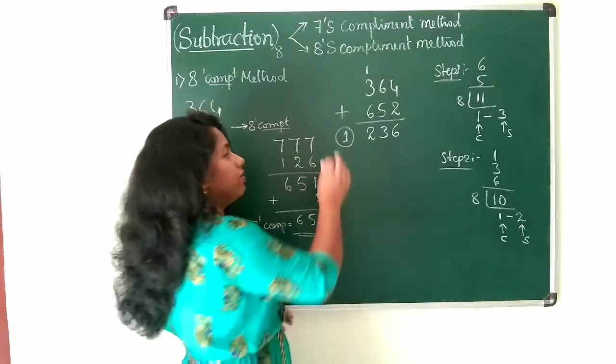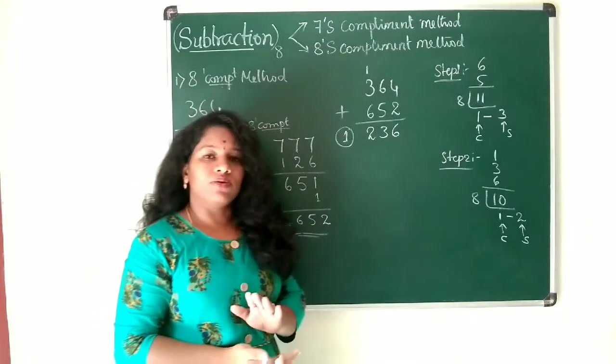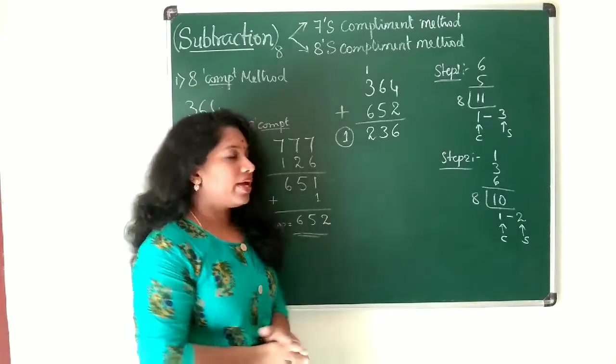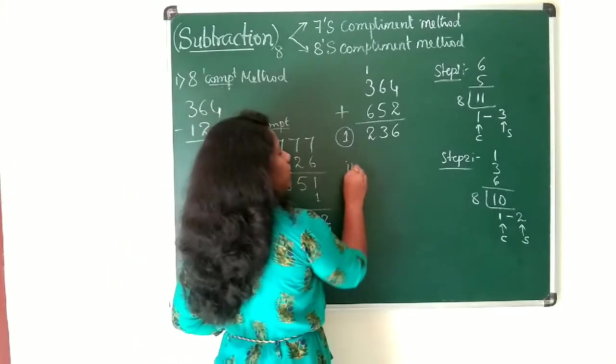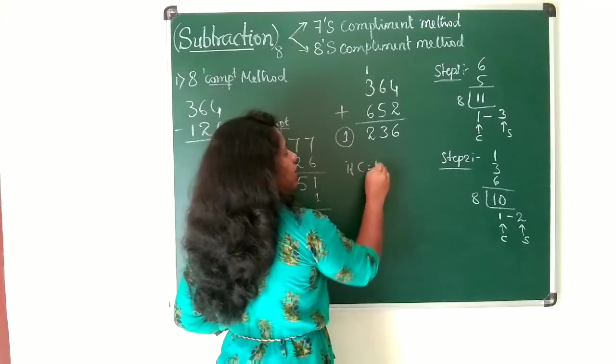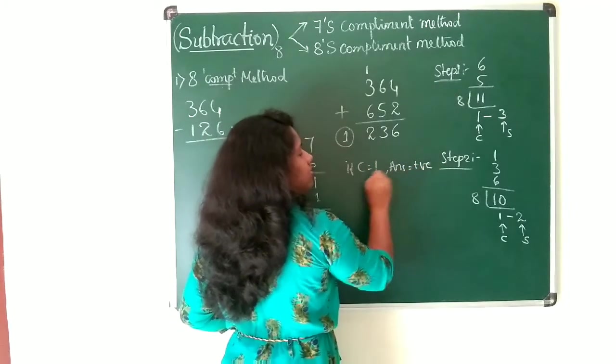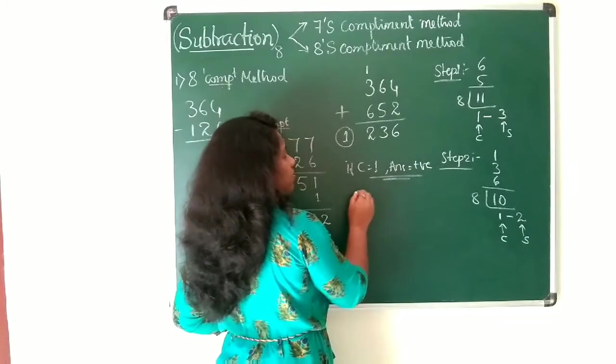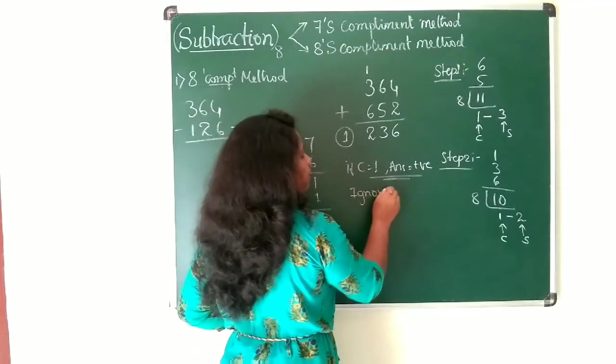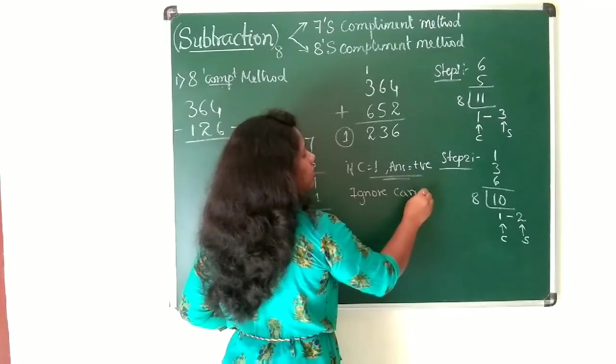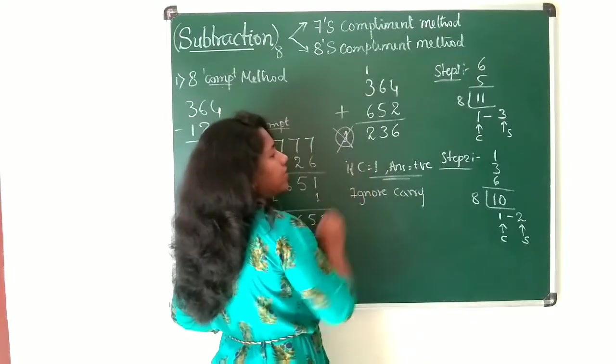Now when you do subtraction by using 8's complemented value, if carry is equal to 1, that means that the answer is positive. And then what you need to do? You need to ignore the carry.